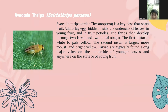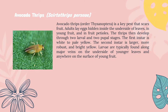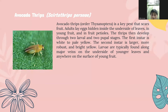The next pest is avocado thrips, or Scirtothrips perseae, a key pest that scars fruit. Adults lay eggs hidden inside the underside of leaves, in young fruit, and in fruit petioles. The thrips develop to larval and pupal stages. The first instar is white to pale yellow; the second instar is larger, more robust, and bright yellow. Larvae are typically found along midrib veins on the underside of young leaves and on the surface of young fruit.